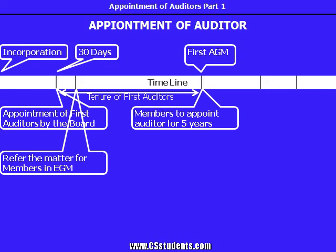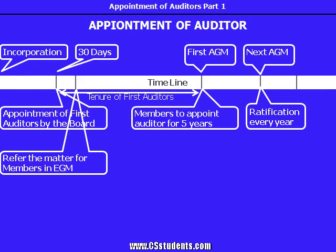Then, in the first annual general meeting, members shall appoint the auditor for five years. Every year, the appointment will be ratified by the members in the coming annual general meeting.